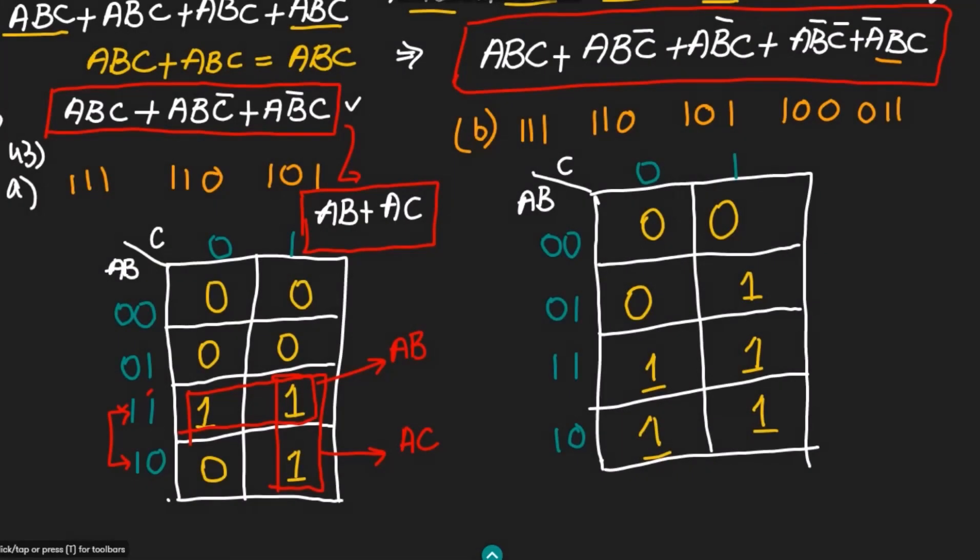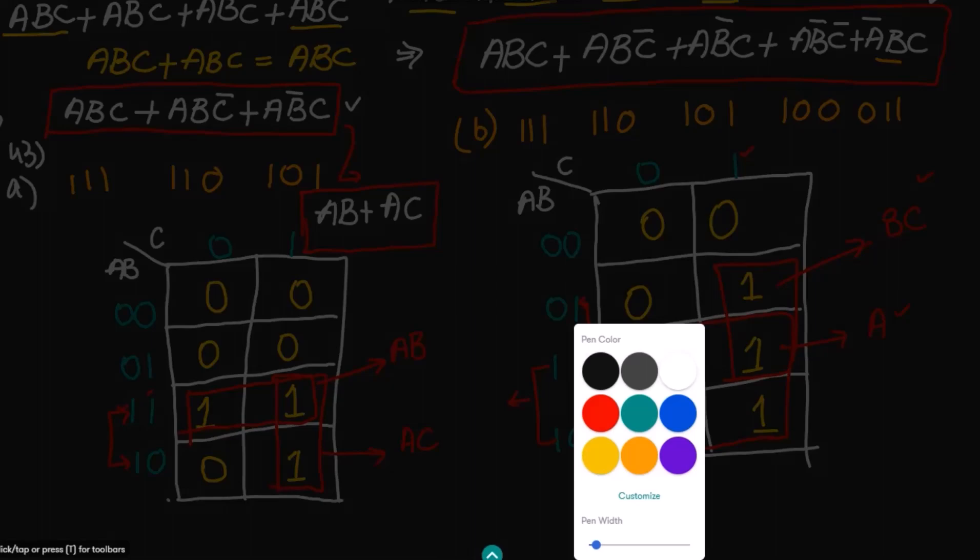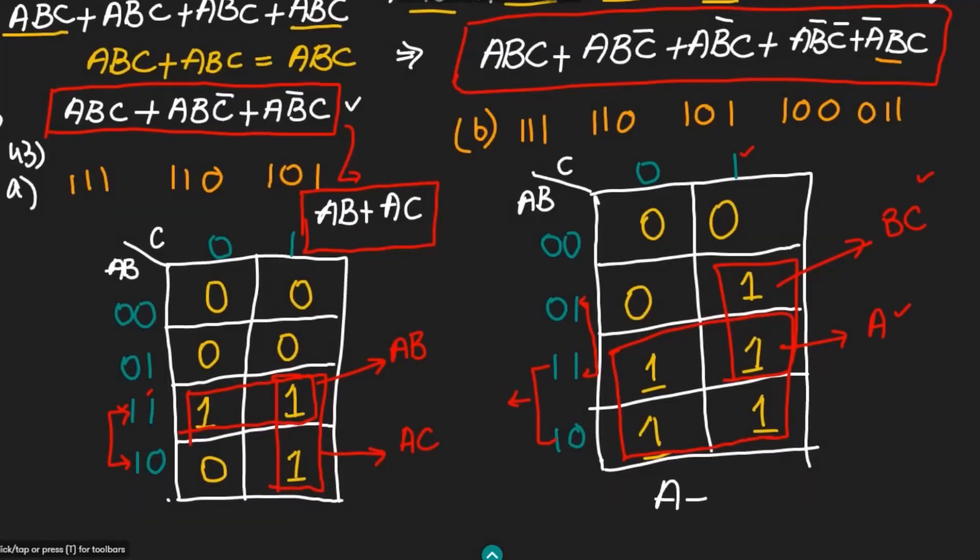Here we can very clearly see that these four ones are combining together and giving me some constant value, and that is basically this A. Therefore, the value for it is A for these four—the constant term which is not changing is this A. Similarly, we can see that here we have also this combination which is this column-wise, and here we can see that this one for B is remaining constant while this one for C is also constant. Therefore, I can write here BC. Therefore, I have these two terms, and the simplified term here will be A plus BC. That is basically the simplified version for this question.